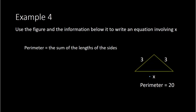So if I take three plus three plus x, we know that must equal twenty, because the perimeter is given to you as twenty. So this would be my equation, and I can actually simplify a little bit. Three plus three, we know is six. So I could write this as twenty equals six plus x.